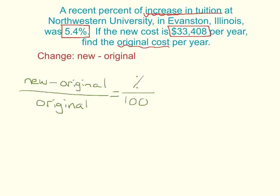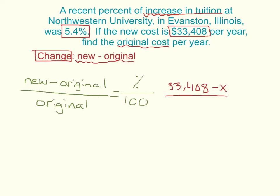I modified the formula a little bit. Instead of writing 'change over original,' I broke up what the change means: change is just the subtraction — the new value minus the original — all divided by the original, equals percent over 100. I'm going to plug in all the information I know. The new value is $33,408, and we have to find the original, so it's minus x over x, equals 5.4 over 100.